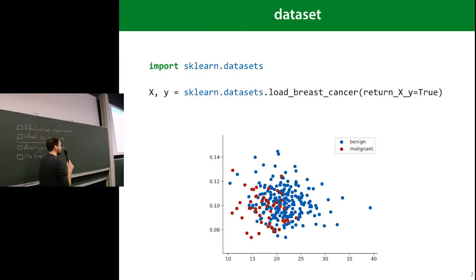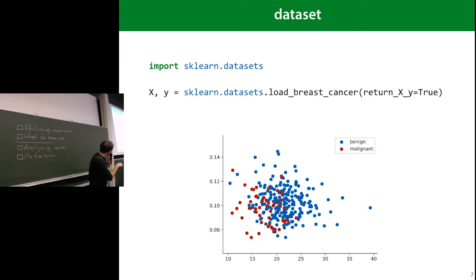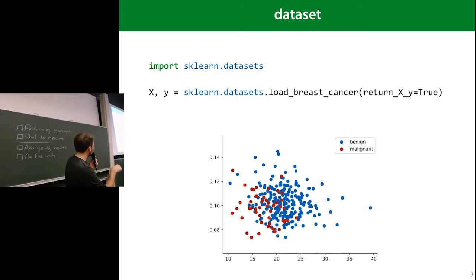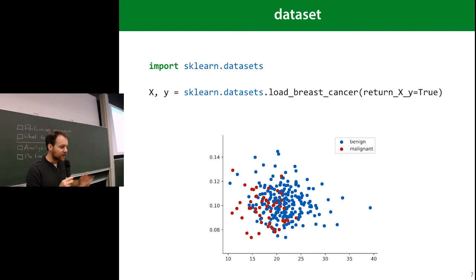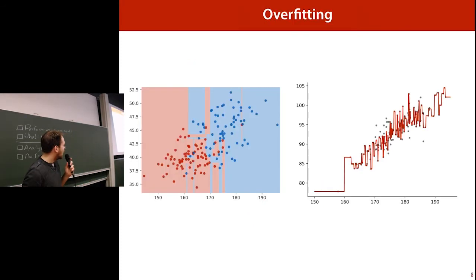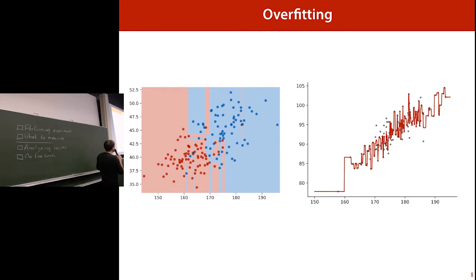It turns out that SKLearn actually has a breast cancer dataset. If you want to try this, you can just import the dataset directly from SKLearn and you get an X matrix and a label vector. The class imbalance is a little bit less here, so there are a lot more positive examples. You can play around with this. Another slide from last week, just to remind you, was about overfitting.